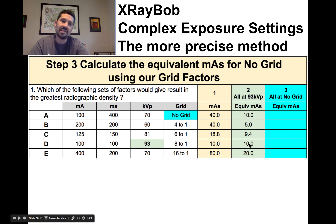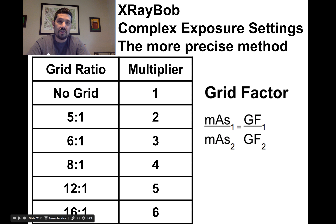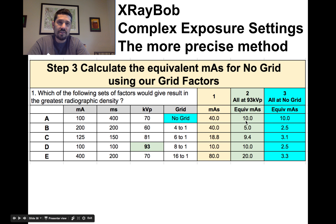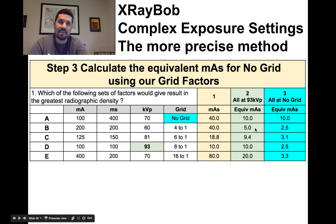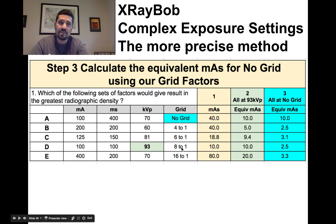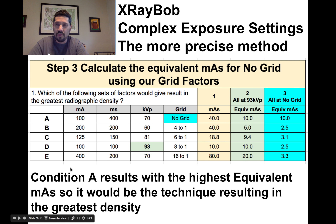So 70 kVp with 40 mAs equals the same density as 80 kVp with 20 mAs, which equals 93 kVp with 10 mAs — you can cut the mAs by a quarter for two 15% steps up. For 60 kVp with 40 mAs, that's three 15% steps up, which is an 8x reduction, so it's equivalent to 93 kVp with 5 mAs. For 81 kVp — one step away from 93 — the mAs just cuts in half.